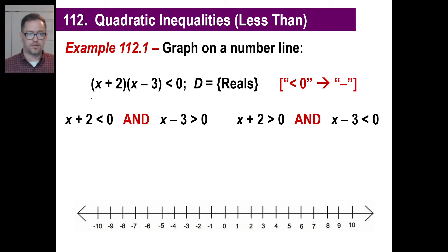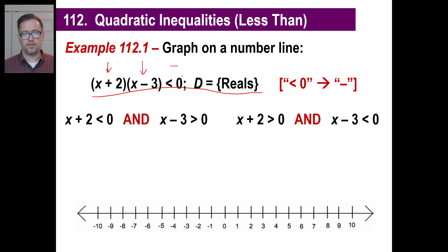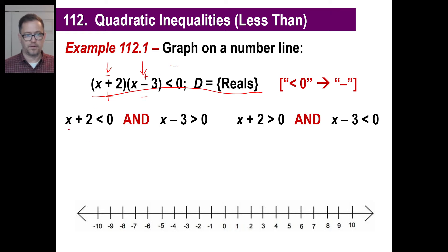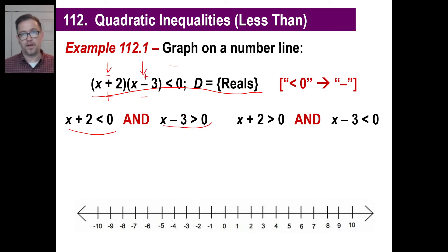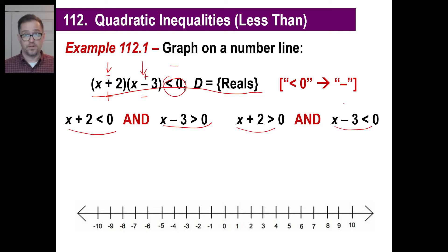We're going to graph this on the number line. We have this times this and it's less than zero — in other words, negative. So we have two possibilities. Either this factor is positive and this one is negative, or this one is negative and this one is positive. So this part here could be negative, in other words less than zero, and this part has to be positive, greater than zero. A negative times a positive is a negative, and a positive times a negative is also a negative.